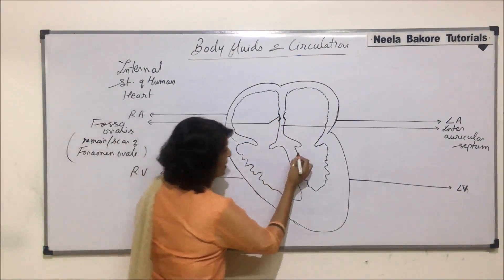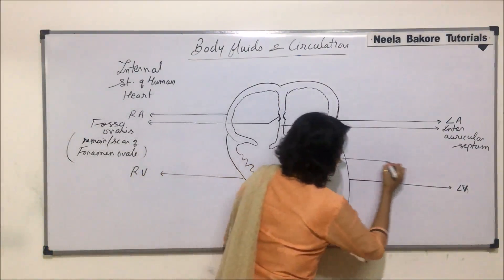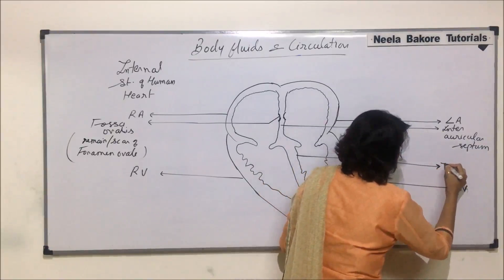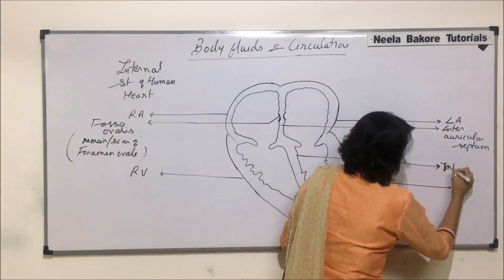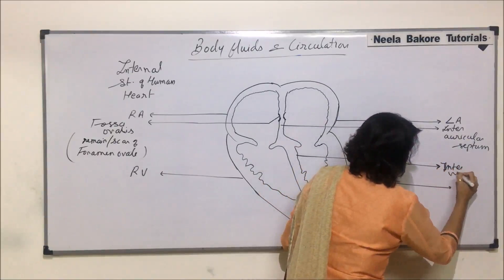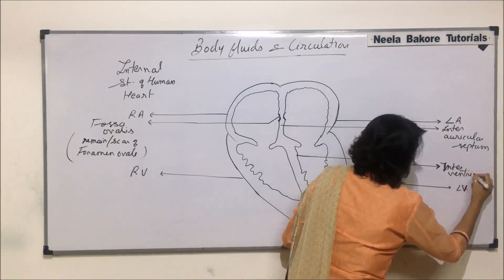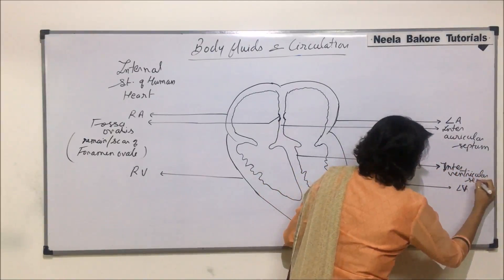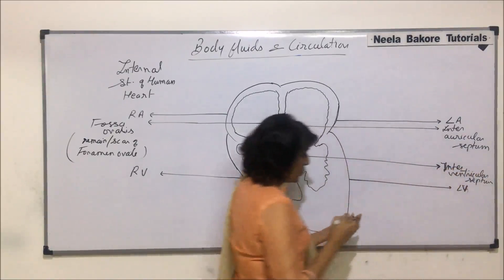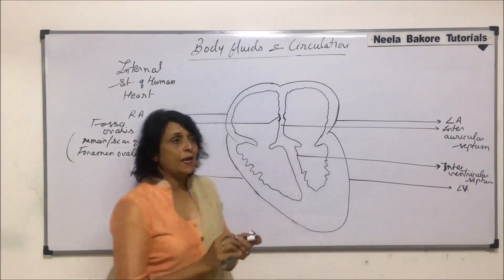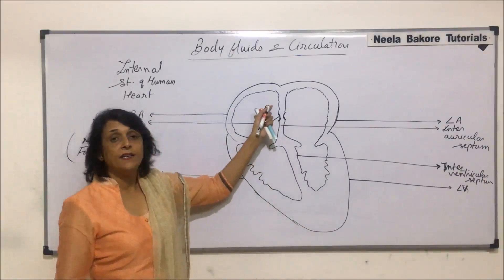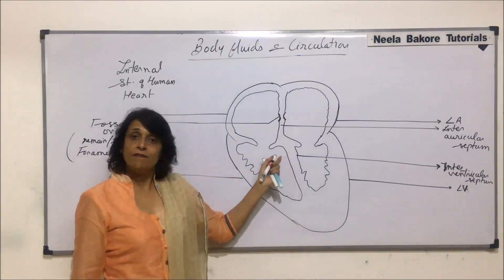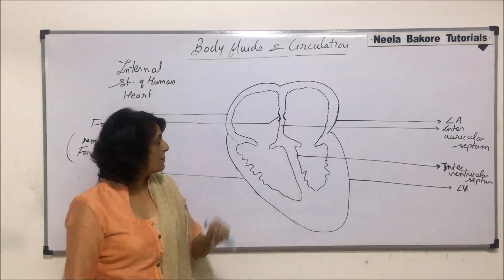This partition between the two ventricles is the interventricular septum, and the fossa ovalis depression is located in the interauricular septum.